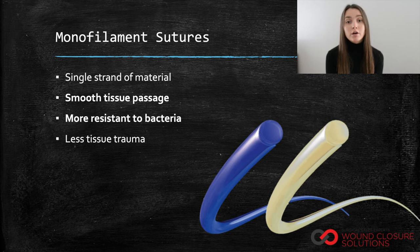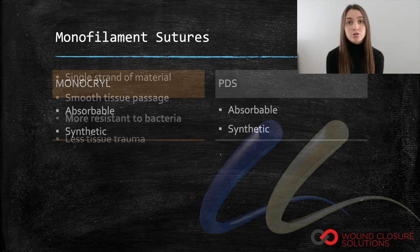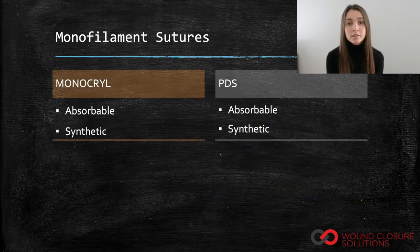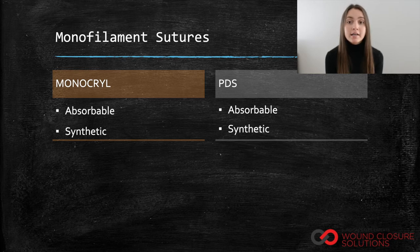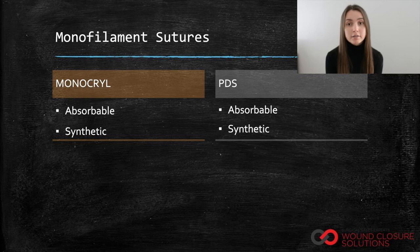Two of Ethicon's most popular monofilament suture options include Monocryl and PDS. Monocryl and PDS are both absorbable and synthetic suture options, but their indications vary based on their different strength retention profiles.